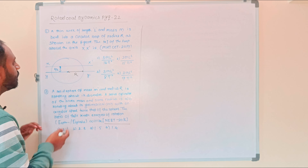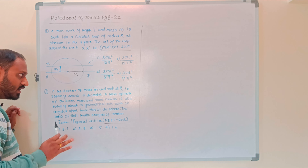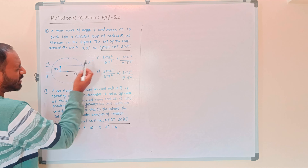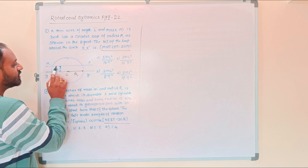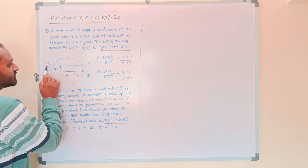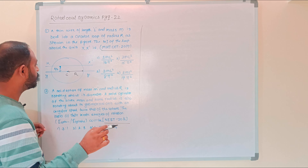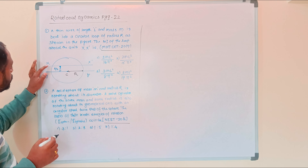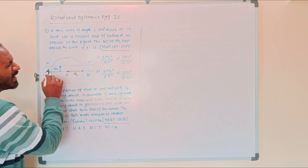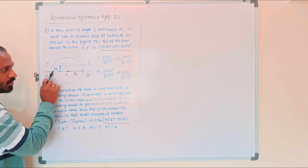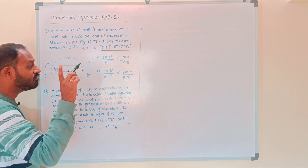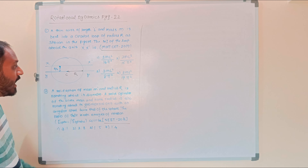Find the moment of inertia of the loop about the axis XX prime. The axis YY prime passes through the center. The axis XX prime is at a distance R/2 from the axis passing through the center of the ring.